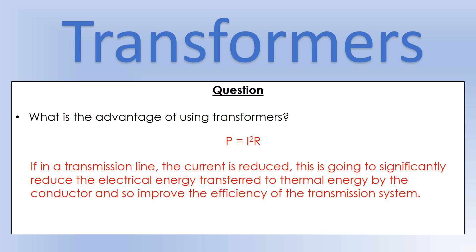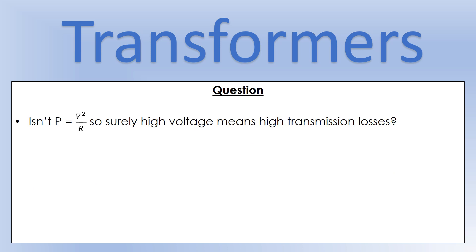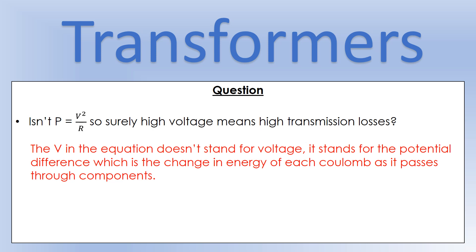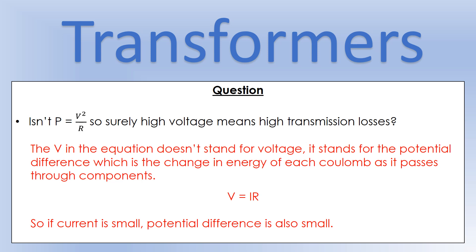A common question: doesn't P = V²/R mean high voltage causes high transmission losses? No. The V in P = V²/R is not the supply voltage — it stands for potential difference, which is the change in energy of each coulomb of charge as it passes through a component. Potential difference across the transmission line is calculated using Ohm's law: V = IR. If the current is really small, the potential difference is also really small, and therefore the power loss using P = V²/R is very small too.